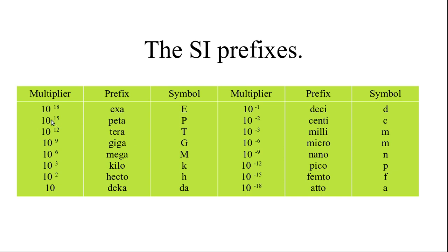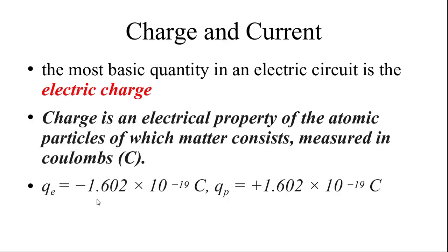Similarly, in positive powers: 10 to the power of 15 is exa, 10 to the power of 12 is tera, 10 to the power of 9 is giga, 10 to the power of 6 is mega, 10 to the power of 3 is kilo — which we use in day-to-day life, like kilogram. Then 10 to the power of 2 is hecto, and centimeter we are also using. These are all the prefix values.